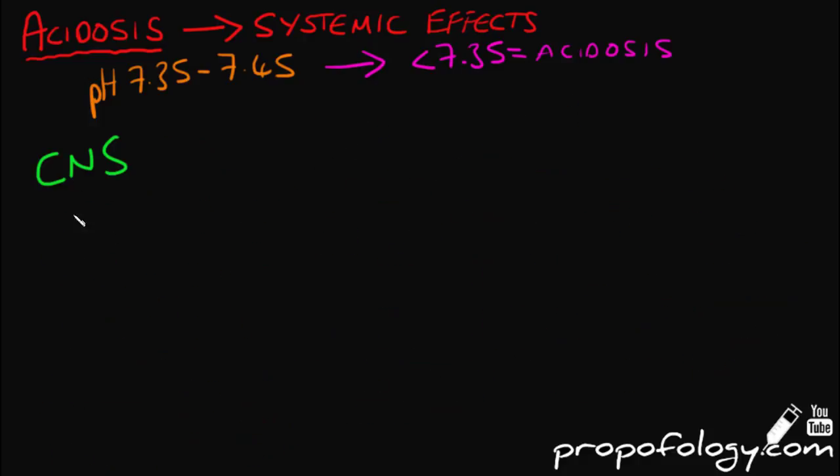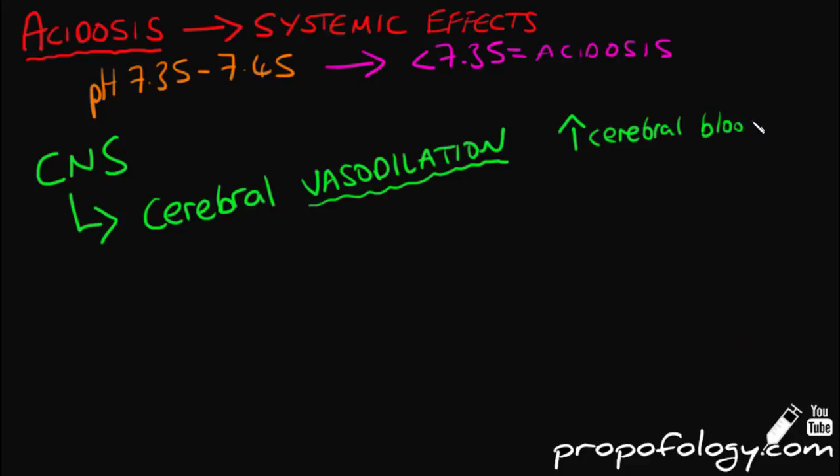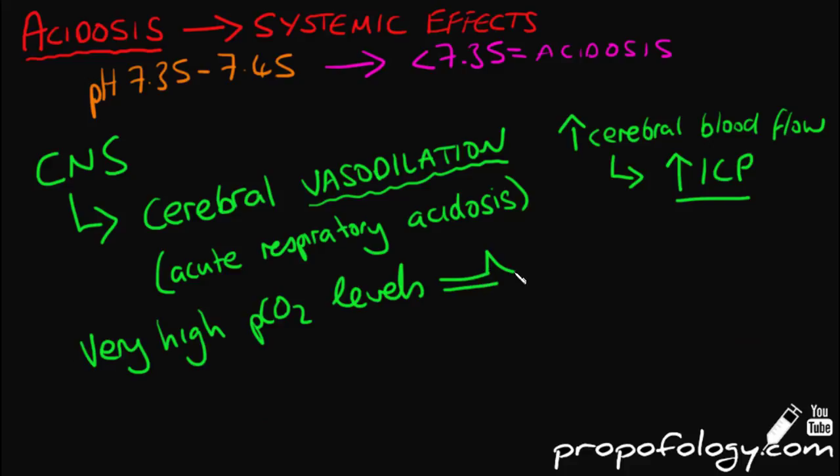Within the central nervous system, acidosis causes cerebral vasodilation that leads to an increase in cerebral blood flow and therefore increased intracranial pressure. This occurs in acute respiratory acidosis. A very high pCO2 level in the blood will cause central depression and narcosis.